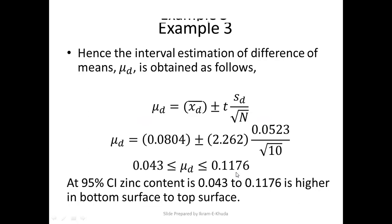Both values are positive, indicating that zinc concentration is higher in the bottom surface compared to the top surface, and this is the interval range within which we can find the zinc concentration difference. I hope all three examples are understandable. The way we approach these problems is very important, and the conclusion and interpretation in the context of the problem is again very important. If you have any queries or confusions regarding these examples or any other related topic, you can contact me and write in the comments. Thank you very much.